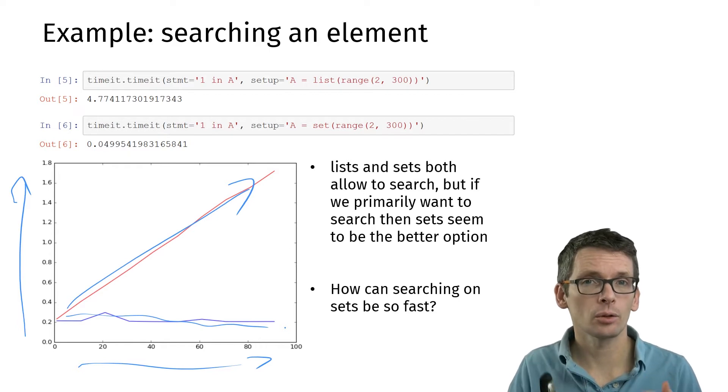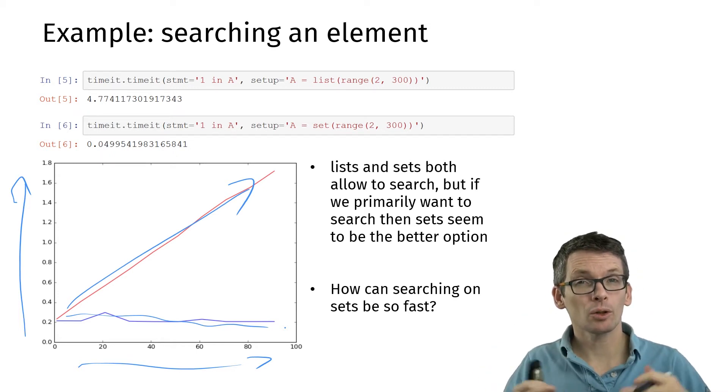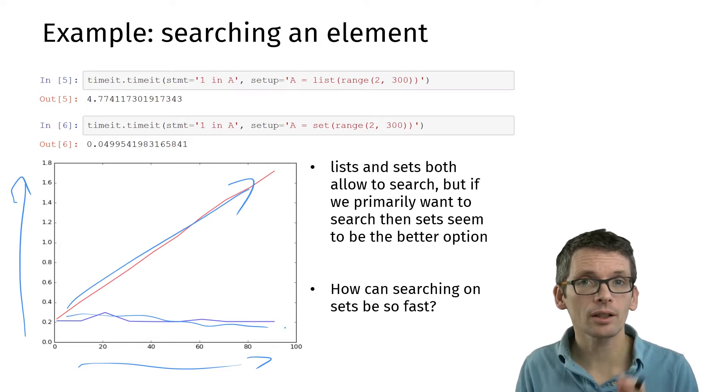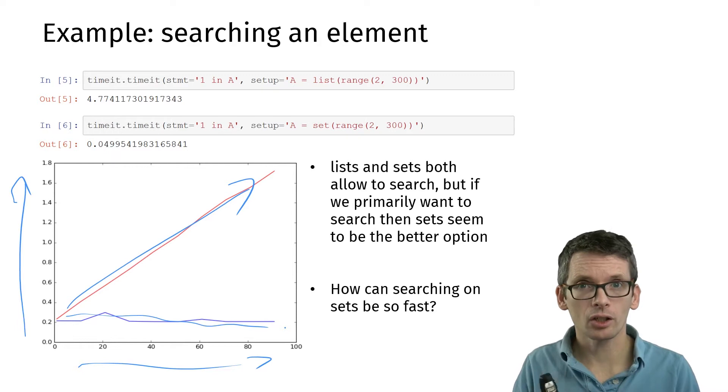Both of these allow you to search—lists and sets—but if you want to search a lot, you will not want to spend linear time; you will want to spend constant time, and then you will want to use a dictionary. How can dictionaries be that fast? That's what we're going to see today.